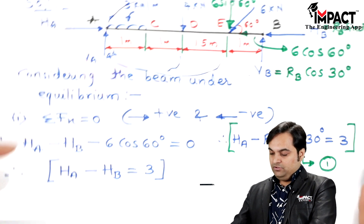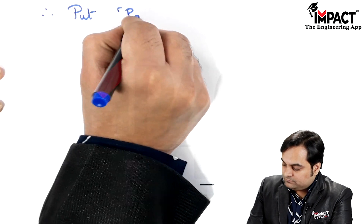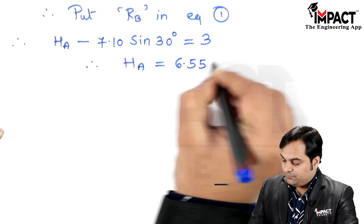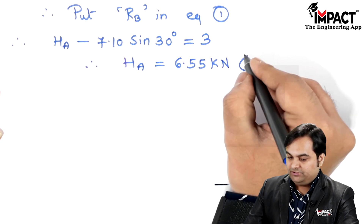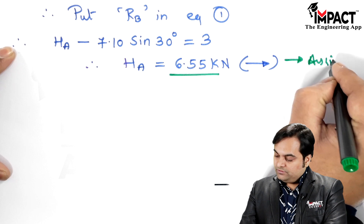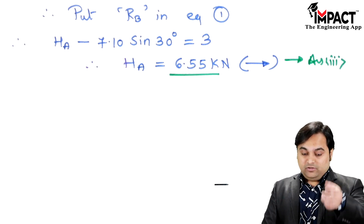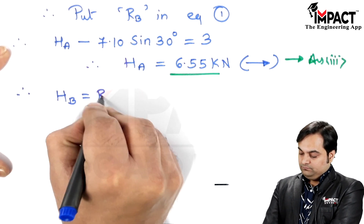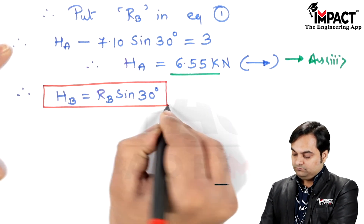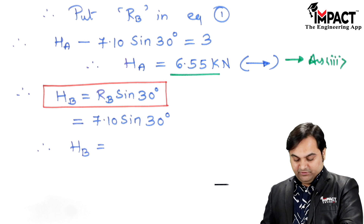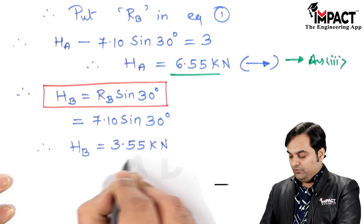Substituting RB = 7.10 kN into Equation 1, HA − RB sin30 = 3, we get HA = 3 + 7.10 × sin30 = 6.55 kN. The positive result confirms the assumed rightward direction is correct. HB = RB sin30 = 7.10 × 0.5 = 3.55 kN, also positive, confirming its assumed direction.